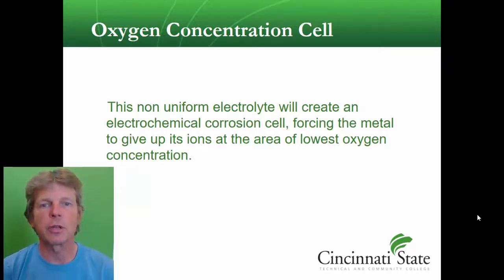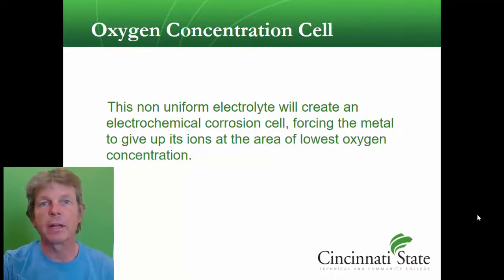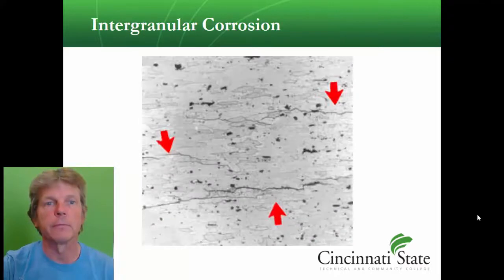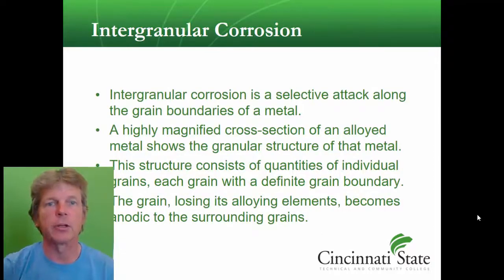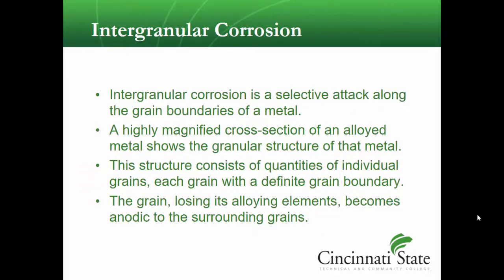This non-uniform electrolyte creates an electrochemical corrosion cell — you have to have both an electrolyte and oxygen to make this work. Intergranular corrosion is a selective attack along the grain boundaries of the metal — the word 'intergranular' refers to the grain boundaries involved.